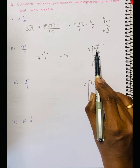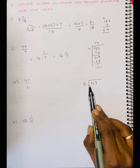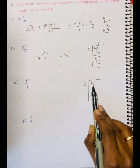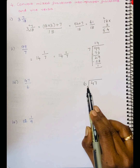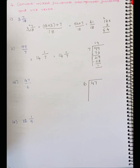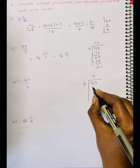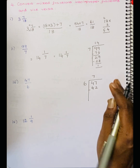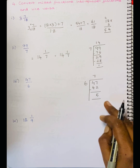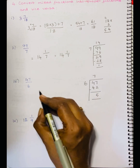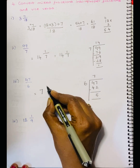Third sum: 47 divided by 6. 4 is a smaller number than 6, so we take two digits: 47. 6 sevens are 42. So 6 tables: 6 sevens are 42. Subtract: 47 minus 42 is 5. So we get the remainder as 5.